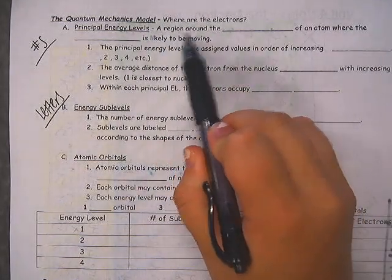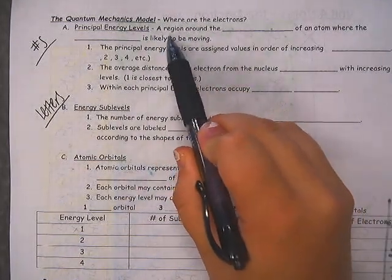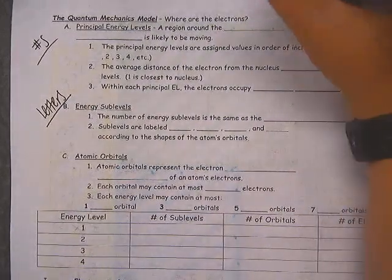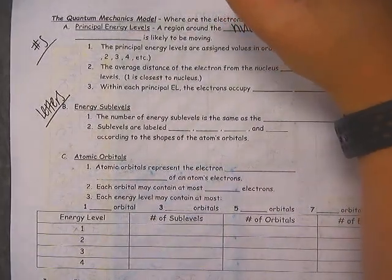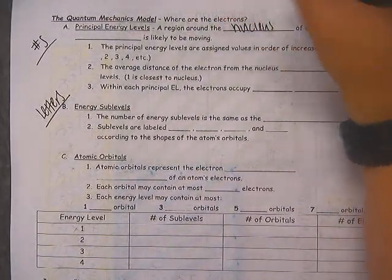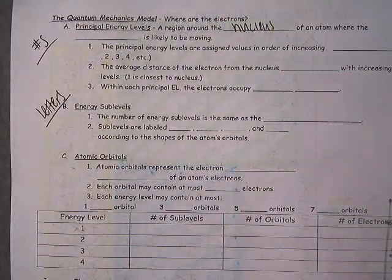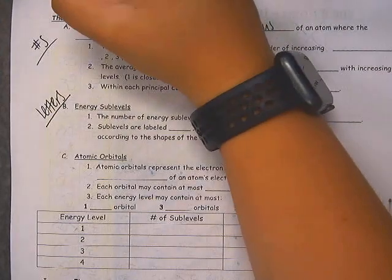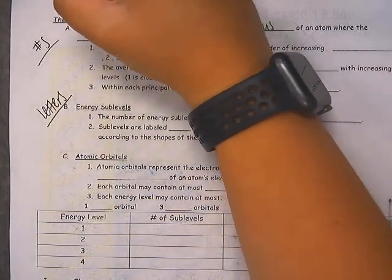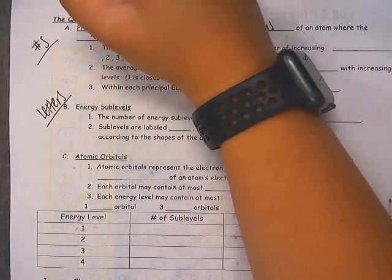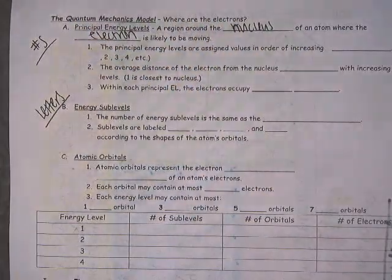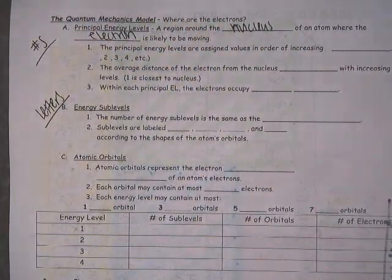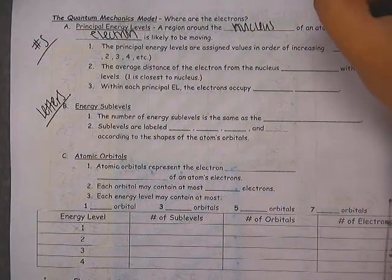Principal energy levels are going to refer to a region around the nucleus of an atom where the electron is likely to be moving. The energy levels are assigned values in order of increasing energy.